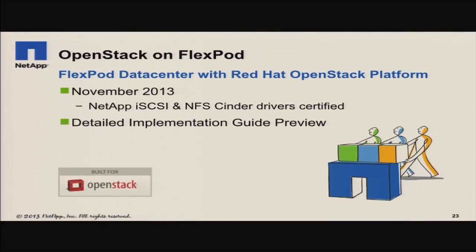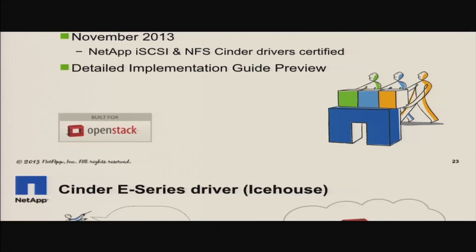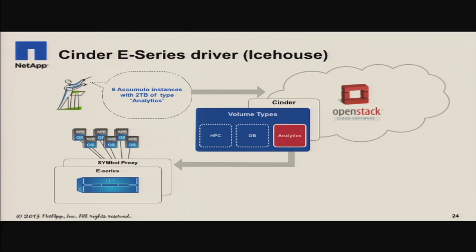NetApp has a leading shared converged infrastructure solution called FlexPod. We work with Cisco on their UCS and Nexus line. The first version we're unveiling here this week is in the form of a Red Hat OpenStack platform — RHEL OSP, Red Hat Enterprise Linux OpenStack platform-based version. There is a reference architecture published on netapp.com/openstack in preview form, with the full release coming in the coming months. We also have an E-Series product — a very dedicated high-throughput storage device. We already have a prototype Cinder driver, and we'll have that upstream in Icehouse.